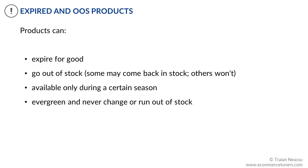Product life cycles and seasonality can rarely be avoided. Some products can expire for good, and others can go out of stock. Out of those that go out of stock, some may be restocked, others won't. Other products are available only during a certain season, while some products are evergreen and never change or run out of stock.